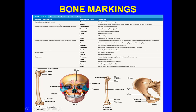We're talking about elevations and projections — that would be the process and ramus. Processes formed where tendons and ligaments attach could be the trochanter, tuberosity, tubercle, crest, line, or spine. Processes formed for articulation with adjacent bones include head, neck, condyle, trochlear, and facet. Depressions — sort of cavities or crater structures — would be fossa and sulcus. Openings would be foramen, canal, meatus, fissure, and sinus.